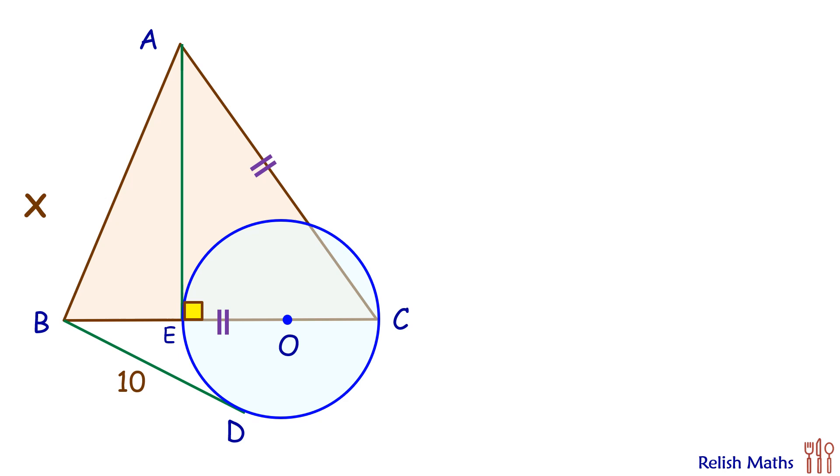Let's check the simple and elegant solution. So we know with respect to this blue circle, BD is tangent and BC is secant. Applying tangent secant theorem we get BD squared, that's the tangent squared, is equal to BE times BC. Putting the value of BD as 10, we get 100 equals BE times BC.